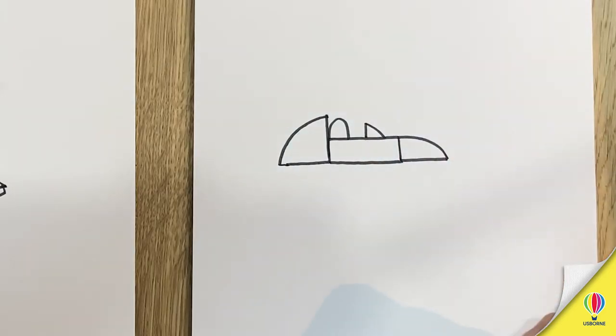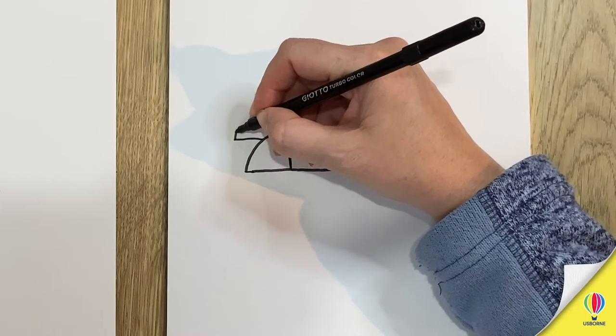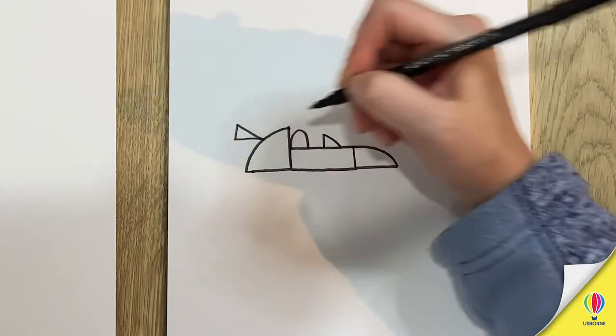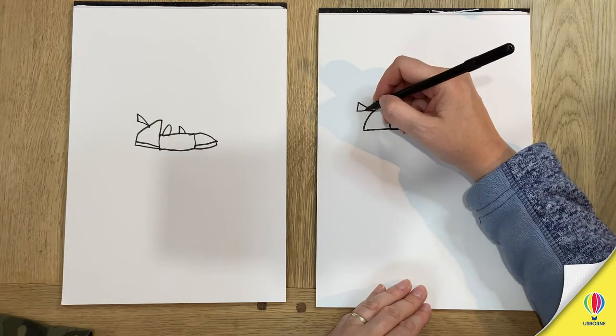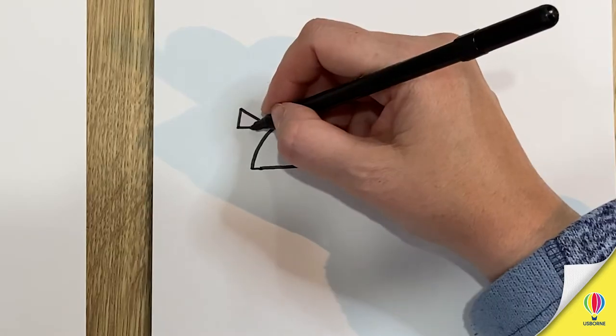Then we need a spoiler on the back so it's a triangle on the back like that, nice big triangle. That's it lovely, mine's going to be floating, it's a hover racing car. We draw a line there just to finish off the spoiler.